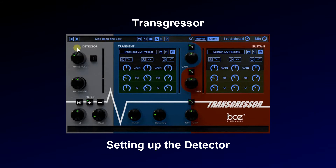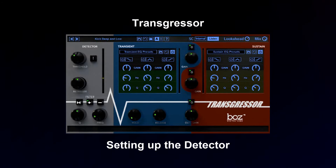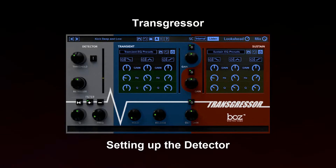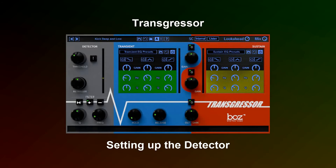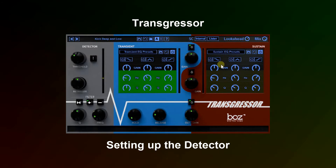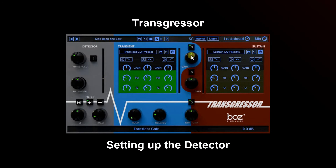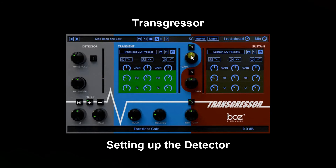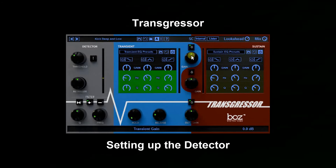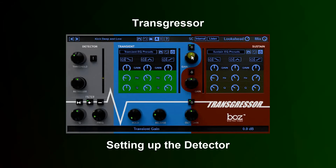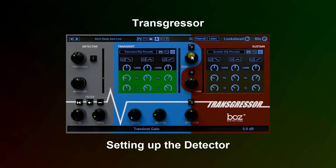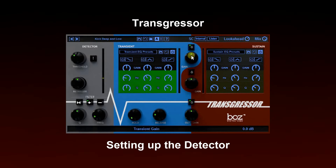Now it's time to set up our threshold and re-trigger. One of the ways I like to do it is to bypass this listen and bypass the sustain. This will sound awkward, but we just want to make sure that the detector is really getting all the transients and not missing any, and not picking up any artifacts that we don't want to hear.